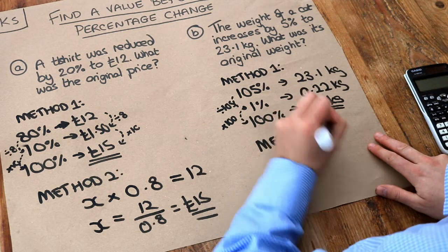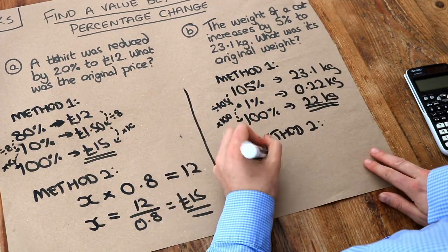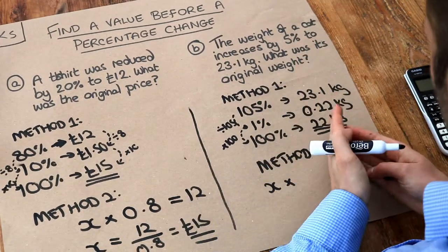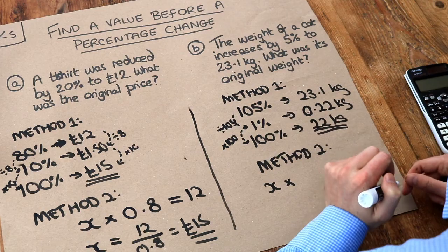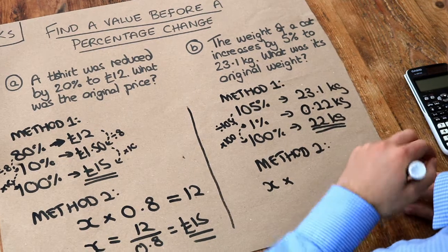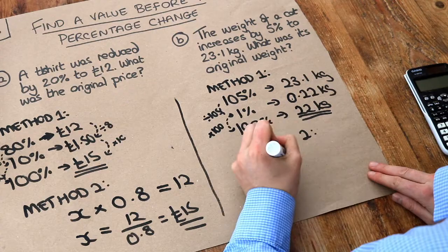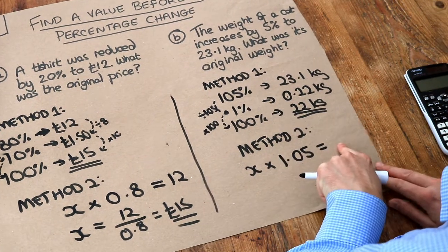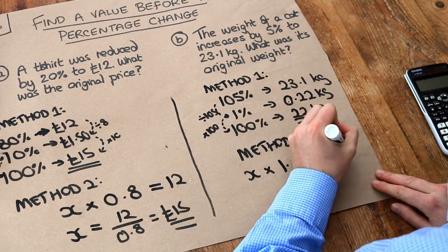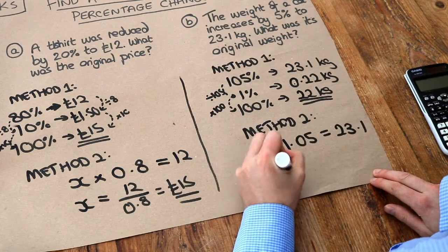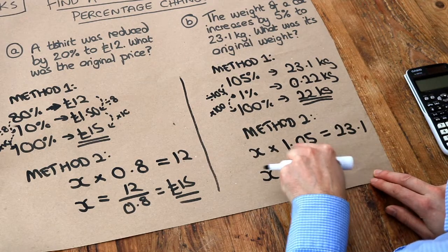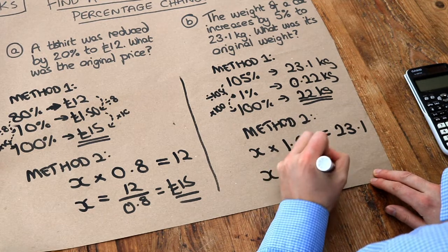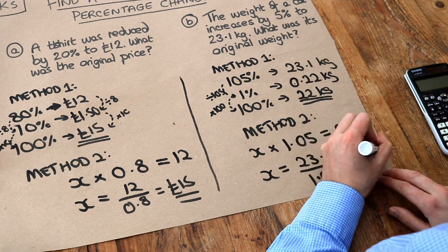Let's use method two. If the original weight of the cat is x, what would we multiply by to increase by 5%? Well, it starts 100%. It goes up by 5% to 105% of its weight. Now, 105% as a decimal is 1.05. And increasing by 5% then gets us to a new weight of 23.1. And again, we divide. x is just equal to the 23.1 divided by that 1.05. And if we do that, we are going to get that same weight of 22 kilograms.